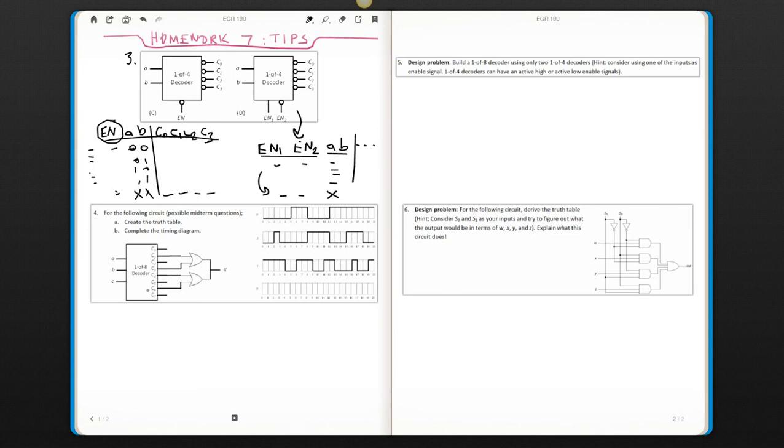For question 4, you need to create the truth table first. Let's say you have your truth table, ABC, and all your decoder outputs.